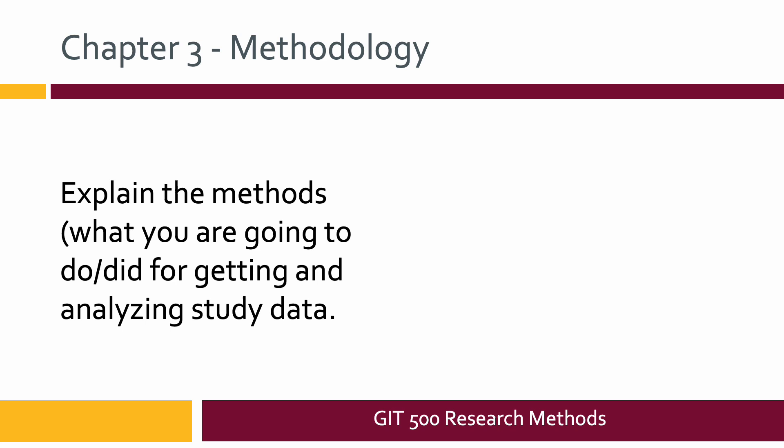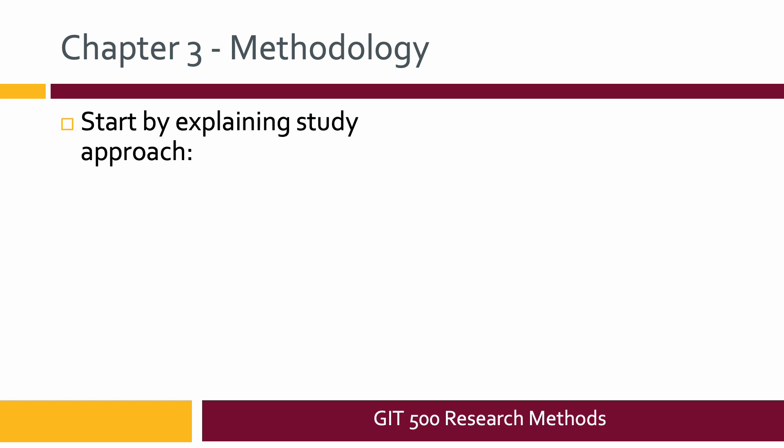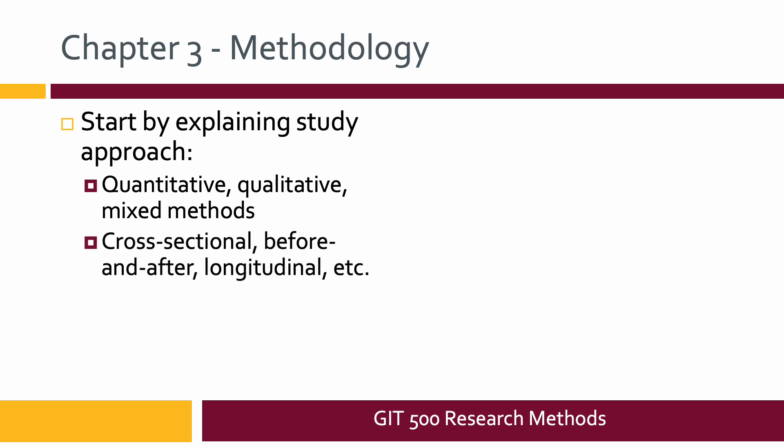Chapter three, methodology, is where you explain the methods for getting and analyzing your study data — basically what you did to get that information. Start this chapter with an introduction, then explain what your study approach was, which should include one of these three: quantitative, qualitative, or mixed methods. You can also talk about more specific designs like cross-sectional, before-and-after, or longitudinal studies, though you don't really have to go too deep in the weeds at this level.